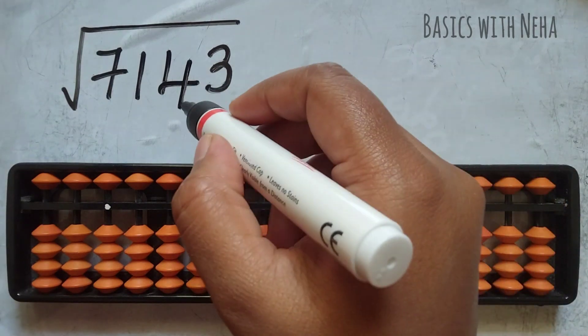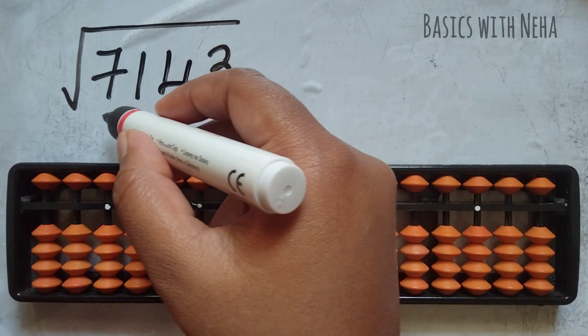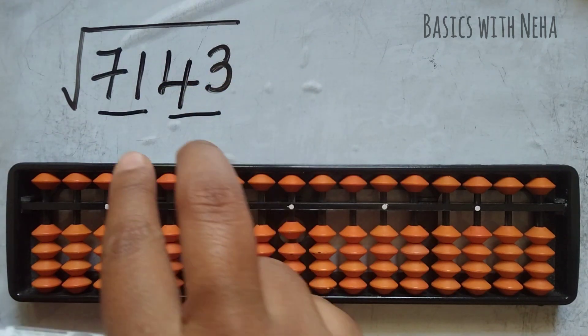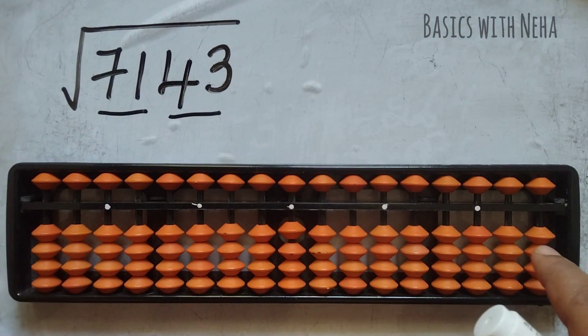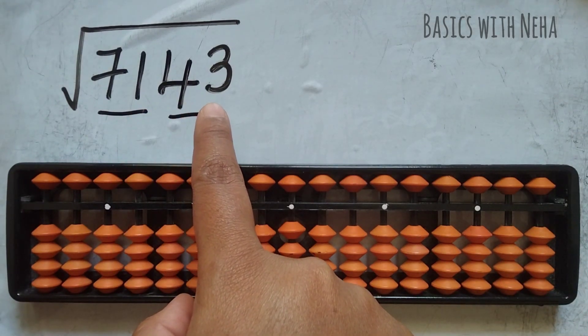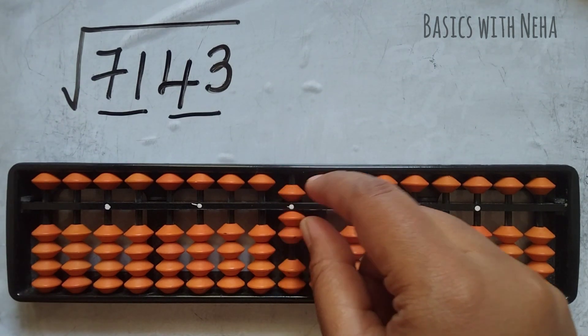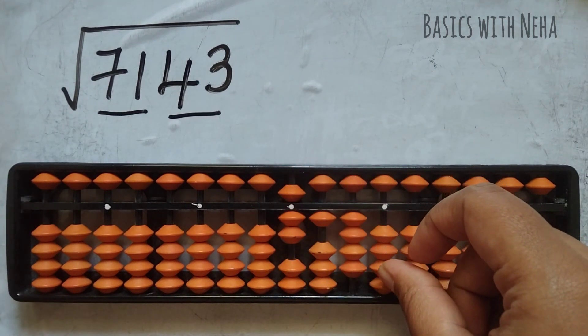So first we need to group this number into two. From the right side, 43 will be one group and 71 is another group. I have to take this question on the right part of the tool. Since I know it's not a perfect square number, I'm going to take it from the center or from here. So it will be 7143.